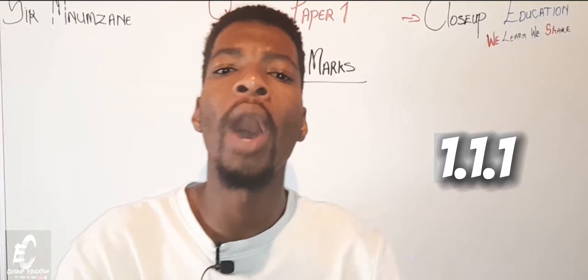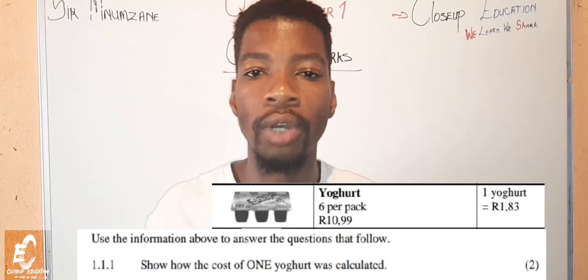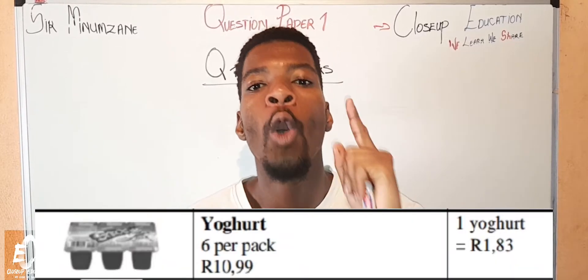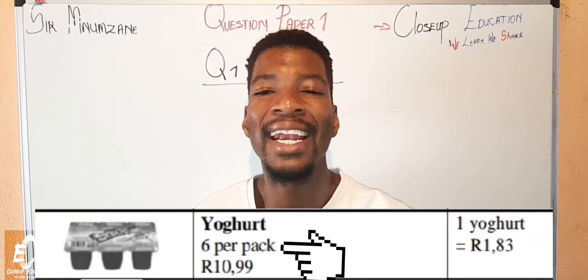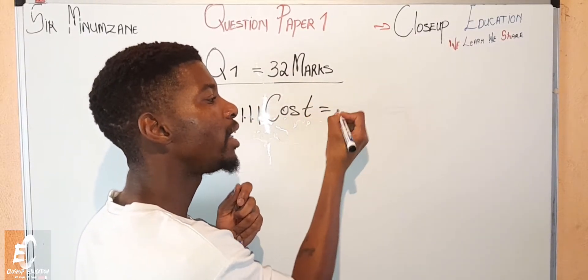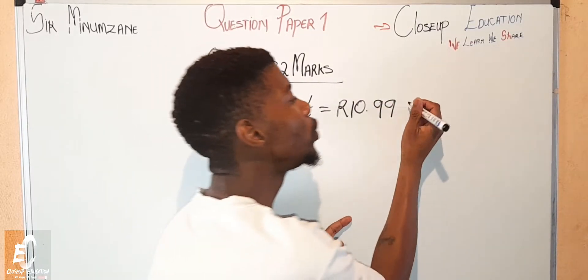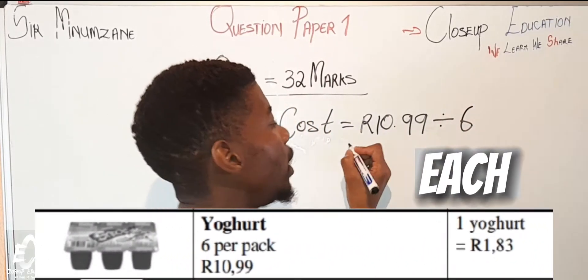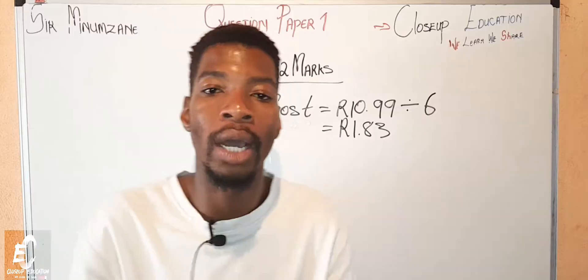Question 1.1.1 says determine how the cost of one yogurt was calculated. Very easy. The question simply wants to understand how did they find that one yogurt equals to one rand 83 cents. We know that a six pack of yogurt equals to 10 rand 99, right? So we know that the cost of six yogurt equals to 10 rand comma 99. So a six yogurt is a pack of yogurt, so we are going to divide it by six so we can find out how much each yogurt costs and our answer will be none other than one rand comma 83. So this was how the cost of one yogurt was calculated.